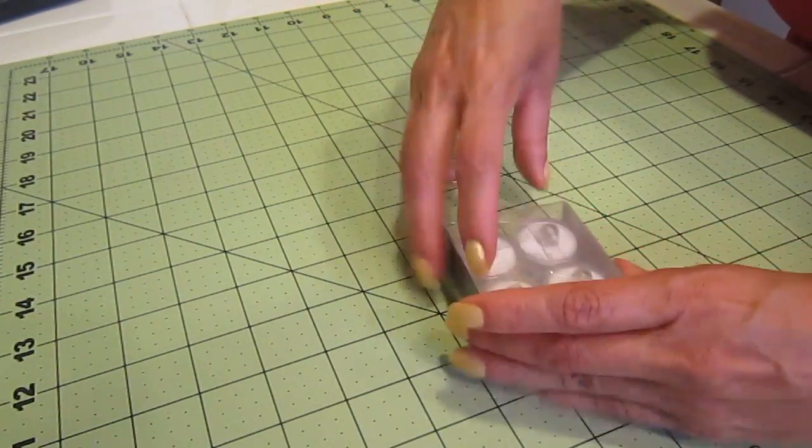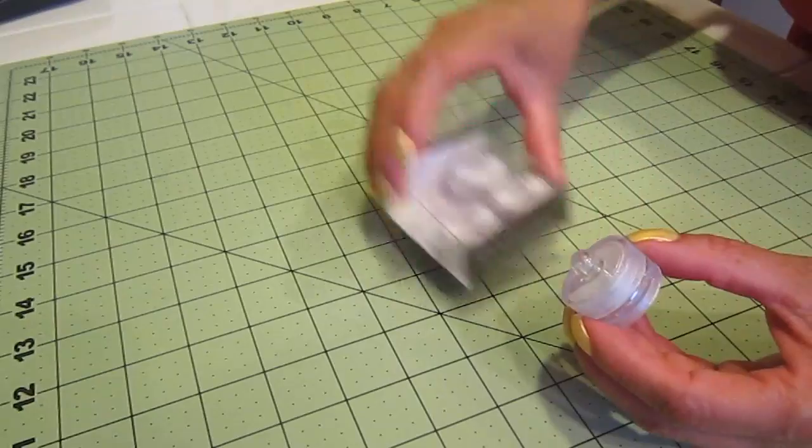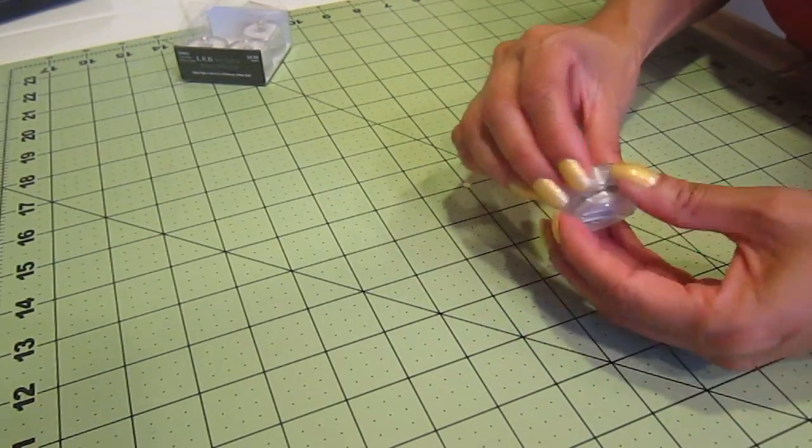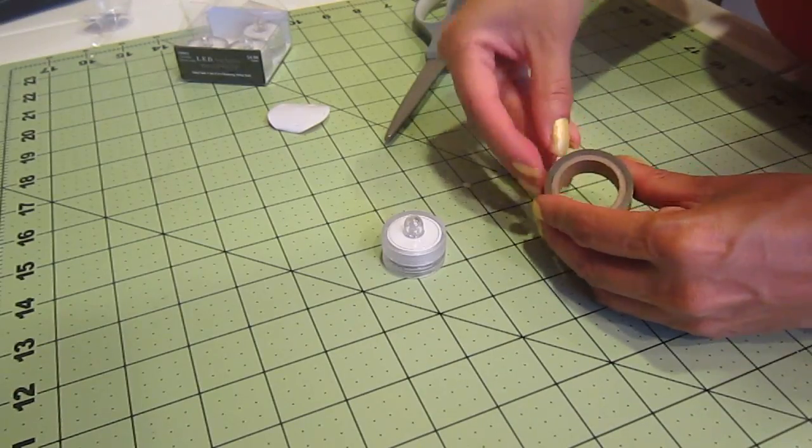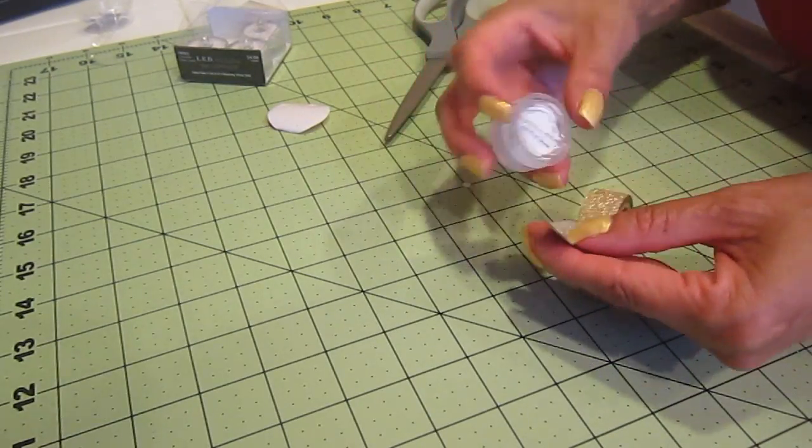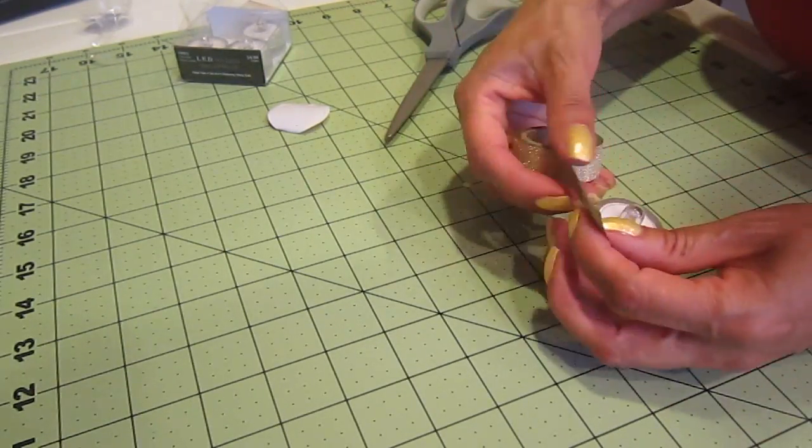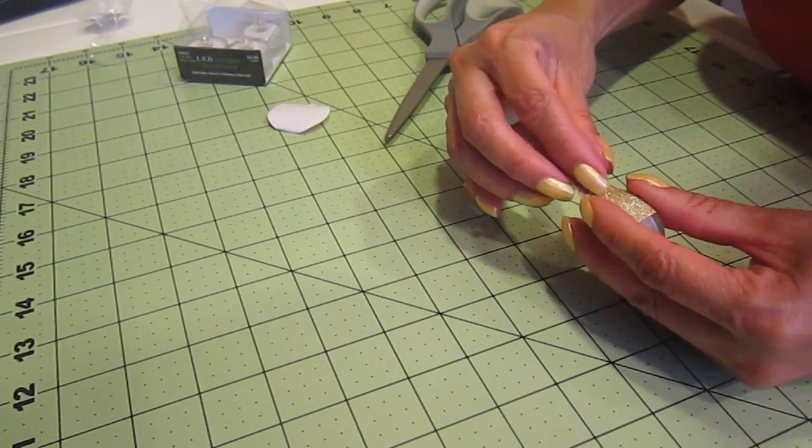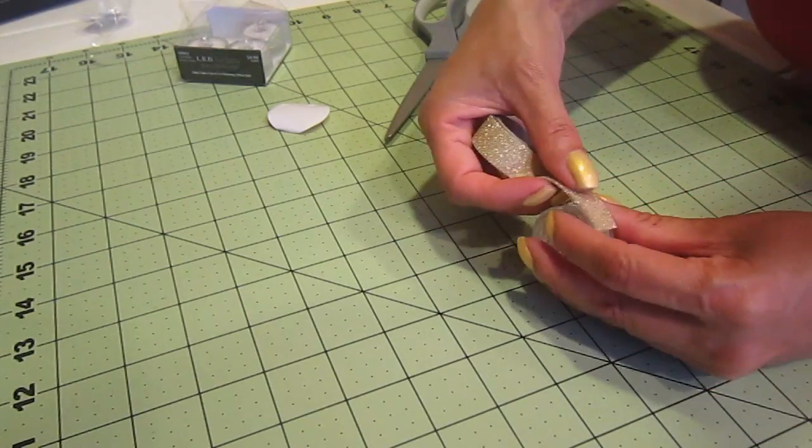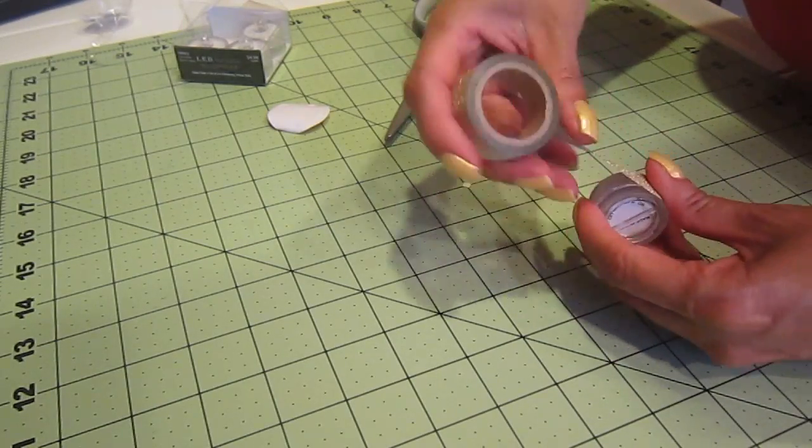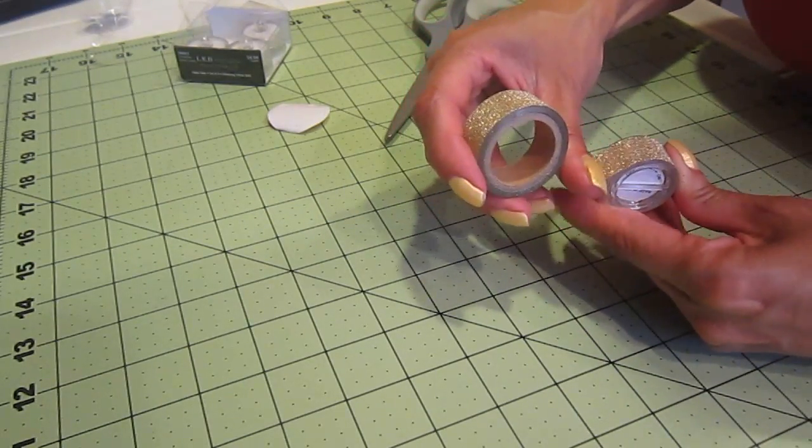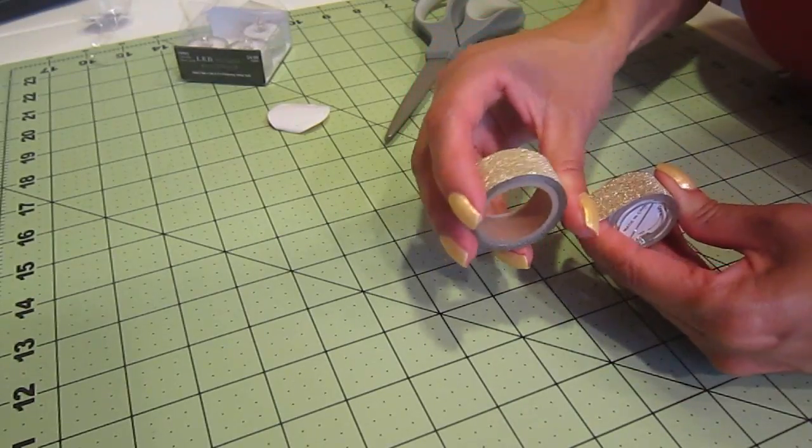Let's get started. This tea light is a lot smaller than regular tea lights. They're about four dollars for a pack of four. Try to choose tape that is the same width as the tea light so you don't have to cut or have any excess on the sides. Select a color that goes with your decor. You can have a lot of fun with them.